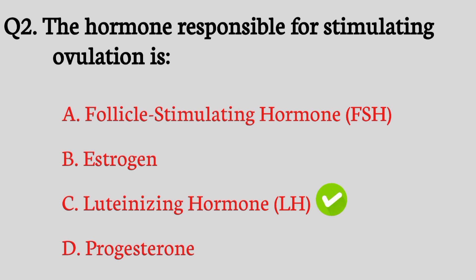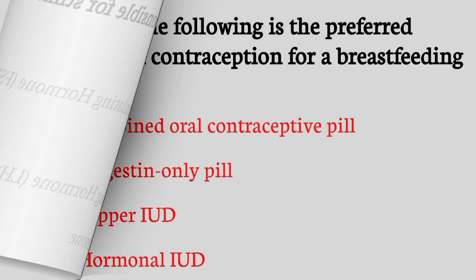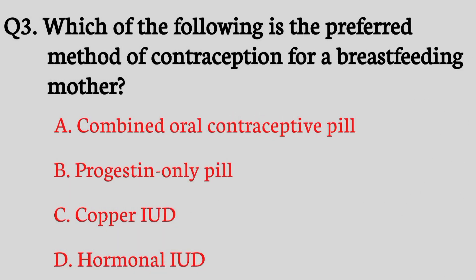Question number three. Which of the following is the preferred method of contraception for a breastfeeding mother? The right answer is option B: Progestin-only pill.